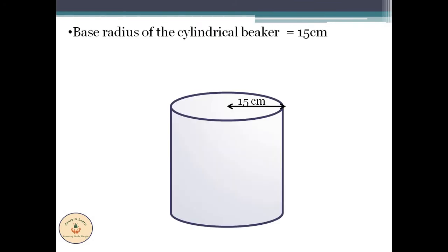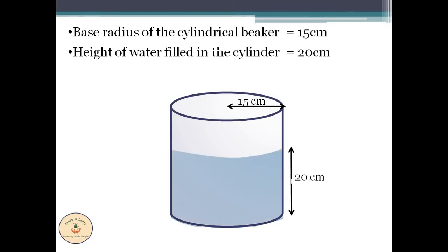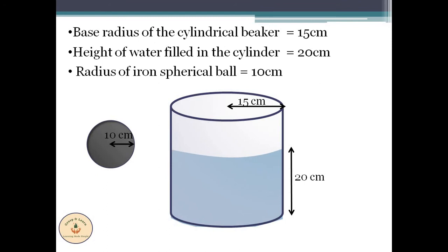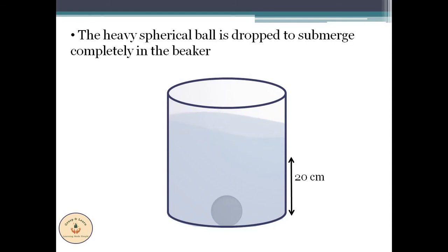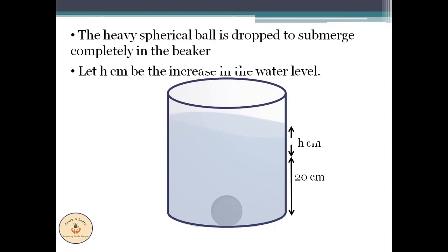In the given example we have a cylindrical beaker with a base radius of 15 cm. The beaker is filled with water up to the height of 20 cm. A spherical iron ball is submerged in the water. The radius of this ball is 10 cm. When the heavy spherical ball is dropped to completely submerge in the beaker, the level of water rises. Let this rise in the level of the water be h cm. We need to find the value of h.